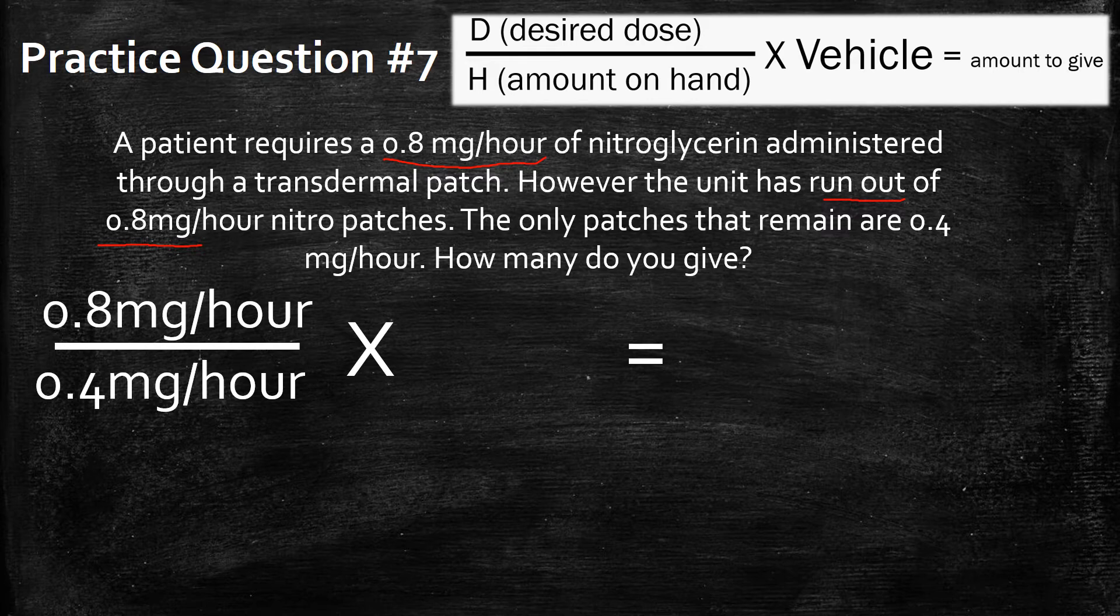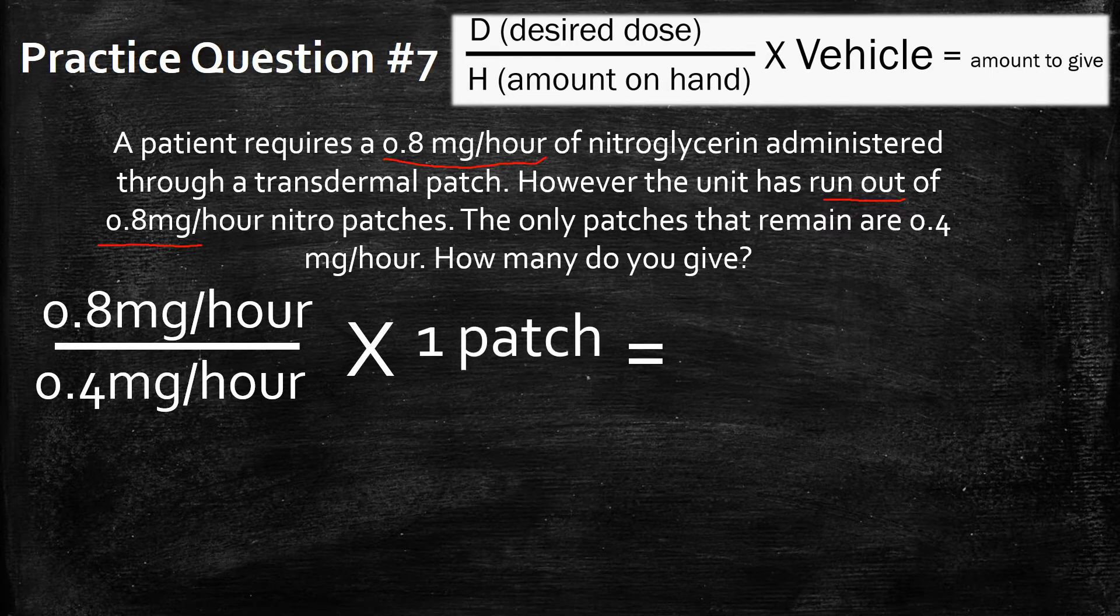Now, the vehicle. What's the vehicle? Well, the vehicle is a patch. There's one patch for every 0.4 mg per hour. We're going to fill that in as well. And now,